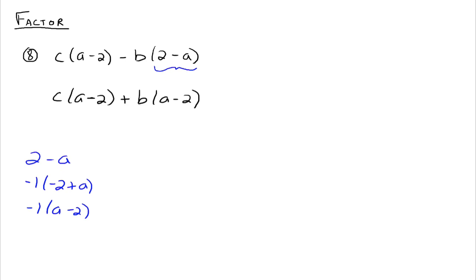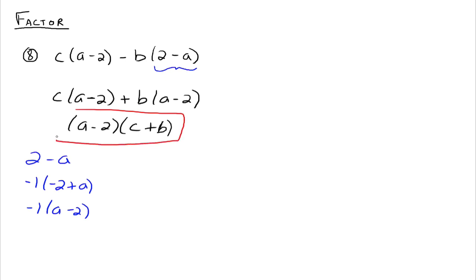That changes it to a plus, and then we have a minus 2. Now these two things have a minus 2 in common, so we can rewrite this as a minus 2 times c plus b — and that's as far as we can go. You can always factor a 1 or a negative 1 out of anything you want. Study well, please let me know if you have any questions.